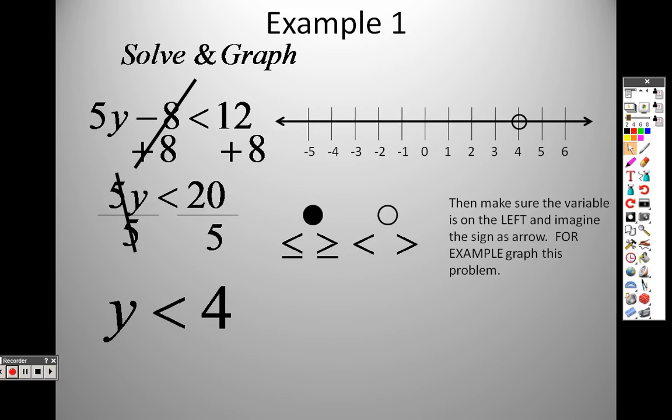Think of this like an arrow. When you go to graph it, think of it like an arrow. This is a less than sign. So I need to shade everything to the left of that point because this is facing to the left. But this concept only works when the variable is on the left-hand side. So you need to make sure you rewrite everything so the variable is on the left-hand side for this to work.